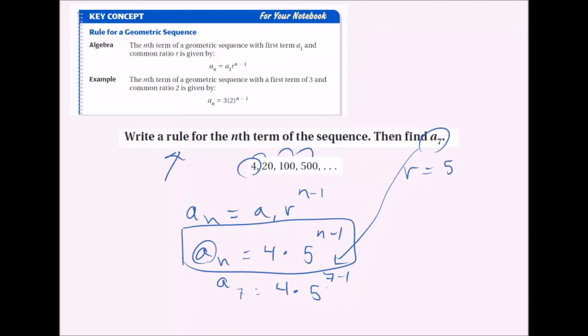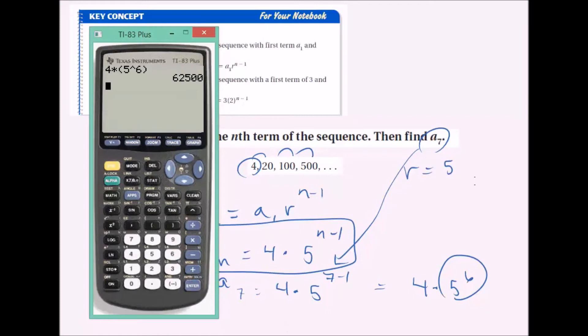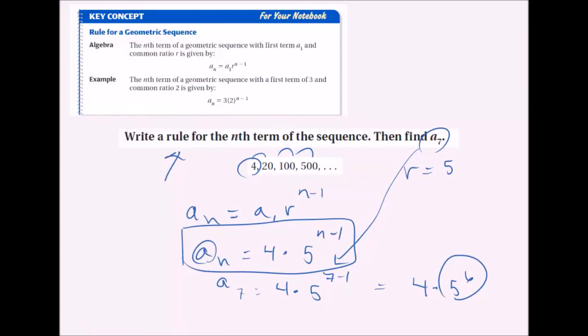So 4 times 5 to the 6th power, that's 4 times 5 to the 6th. We're going to evaluate this first because exponents come first, then we'll multiply it times 4, and we get our answer as 62,500. So a_7 is equal to 62,500.